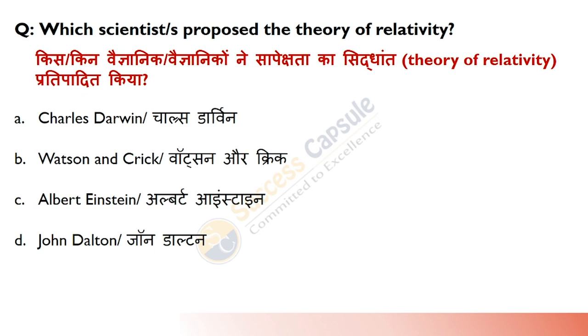Which scientist proposed the Theory of Relativity? Answer is Albert Einstein. Relativity is the study of how different observers measure the same event.